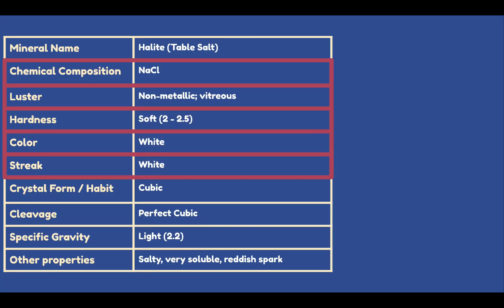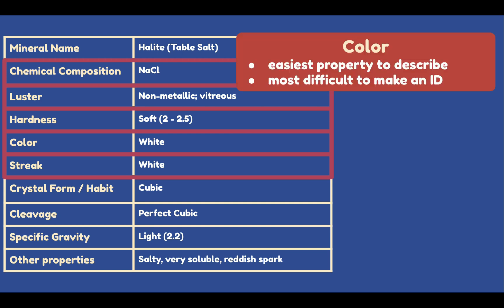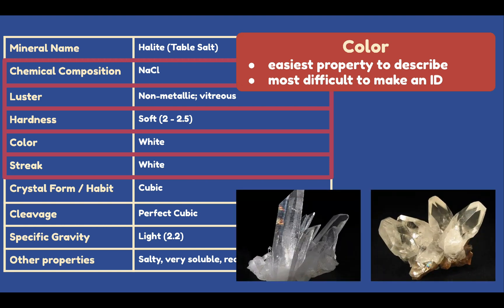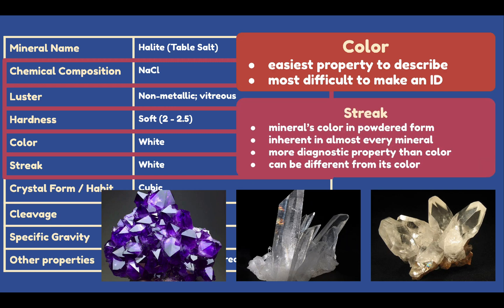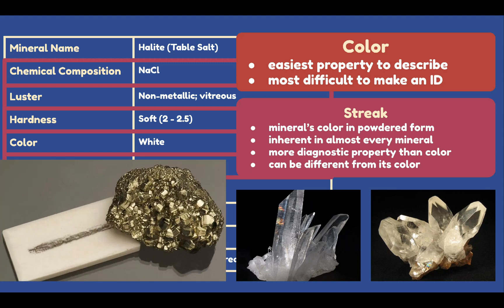Next, we have color and streak, which are both white for halite. Color is the easiest physical property to describe; however, it can also be the most difficult to use for mineral identification. A lot of minerals can exhibit the same or similar colors. For example, calcite and quartz look almost the same. Individual minerals can also display a variety of colors resulting from impurities and geologic processes like weathering — one example is amethyst, which is purple. Streak, on the other hand, is the mineral's color in powdered form. It is inherent in almost every mineral and is a more diagnostic property compared to color. Note that the color of a mineral can be different from its streak.